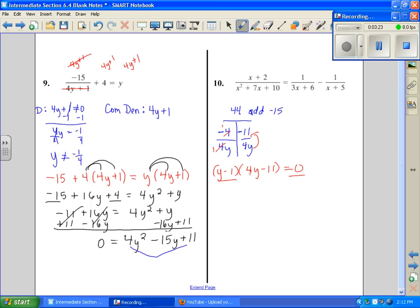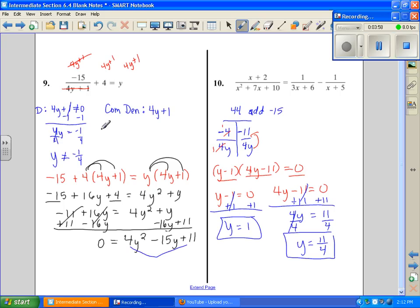Set this one equal to 0 and solve because of our zero product property. And then I set this one equal to 0 and solve. That means y equals 1. And over here, I have y equals 11 fourths. Now, we need to go back and check our domain. Domain just says it cannot equal negative 1 fourth. So, this is a solution, and this is a solution.